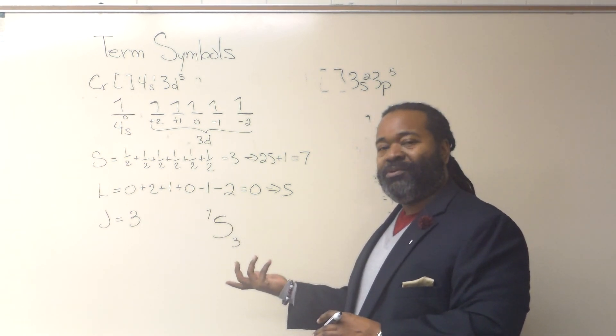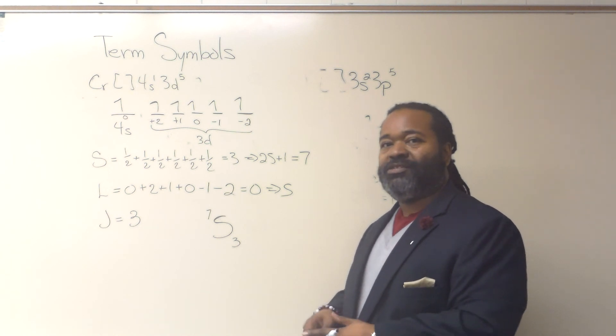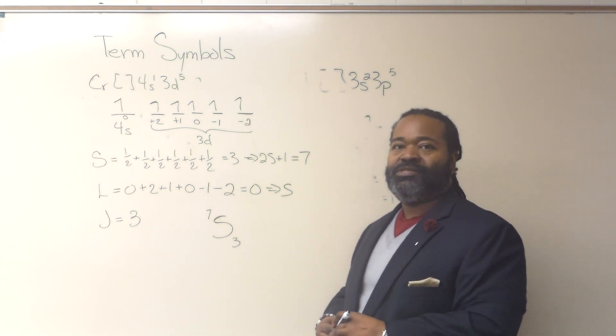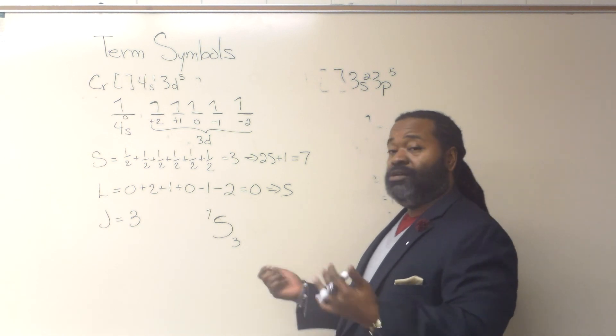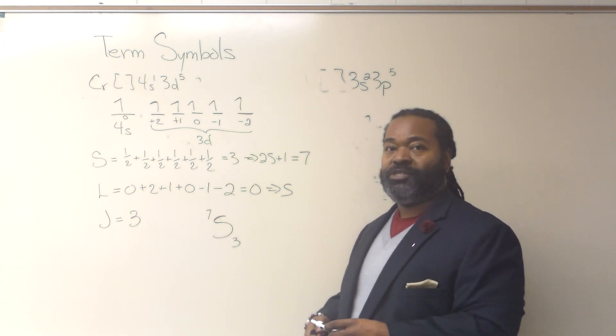And this is an example of how we can write out ground state term symbols using the basic rules for determining all of the parts of an individual term.